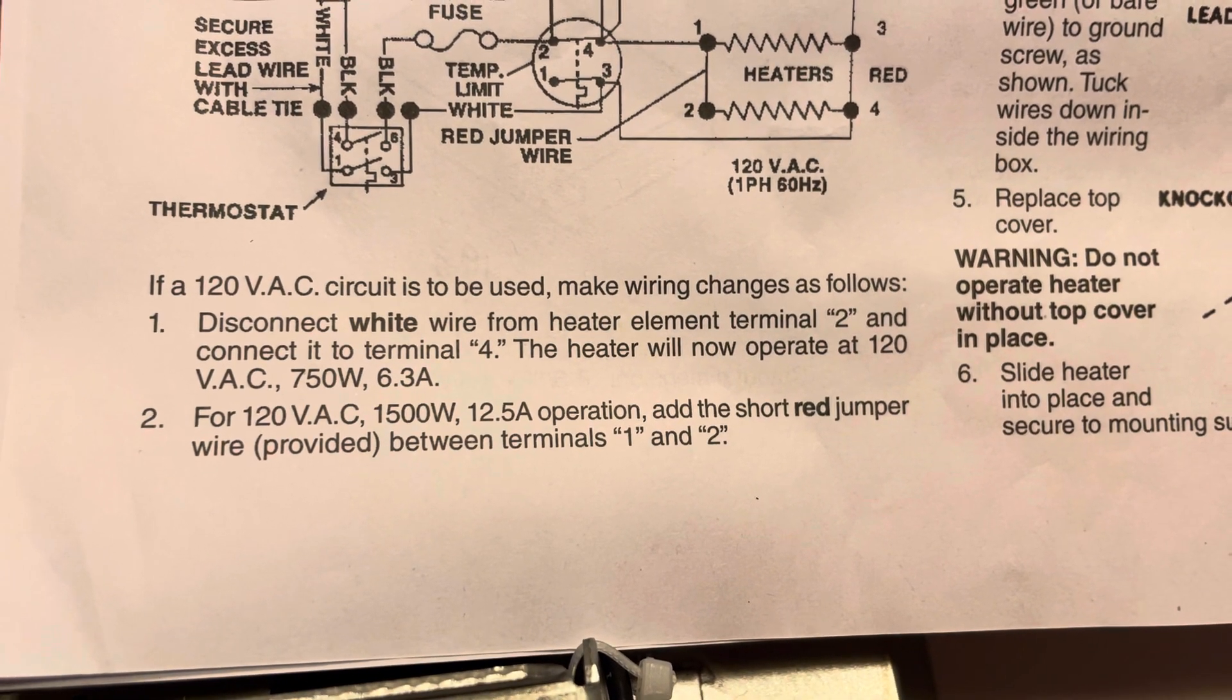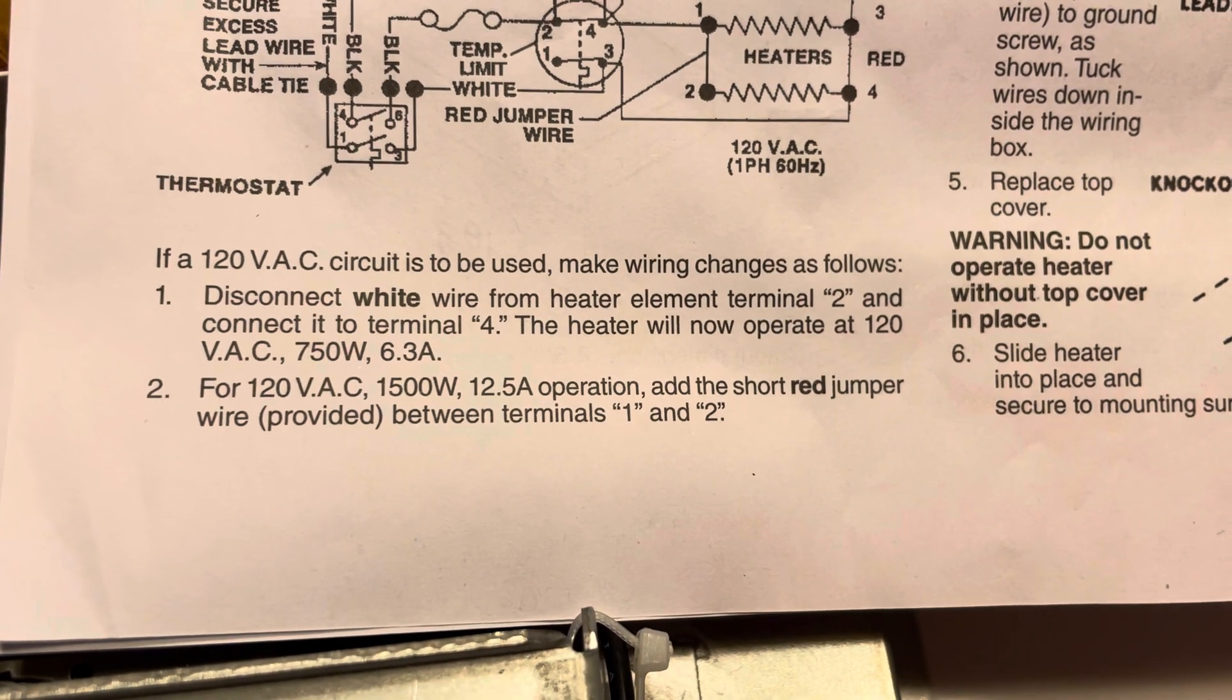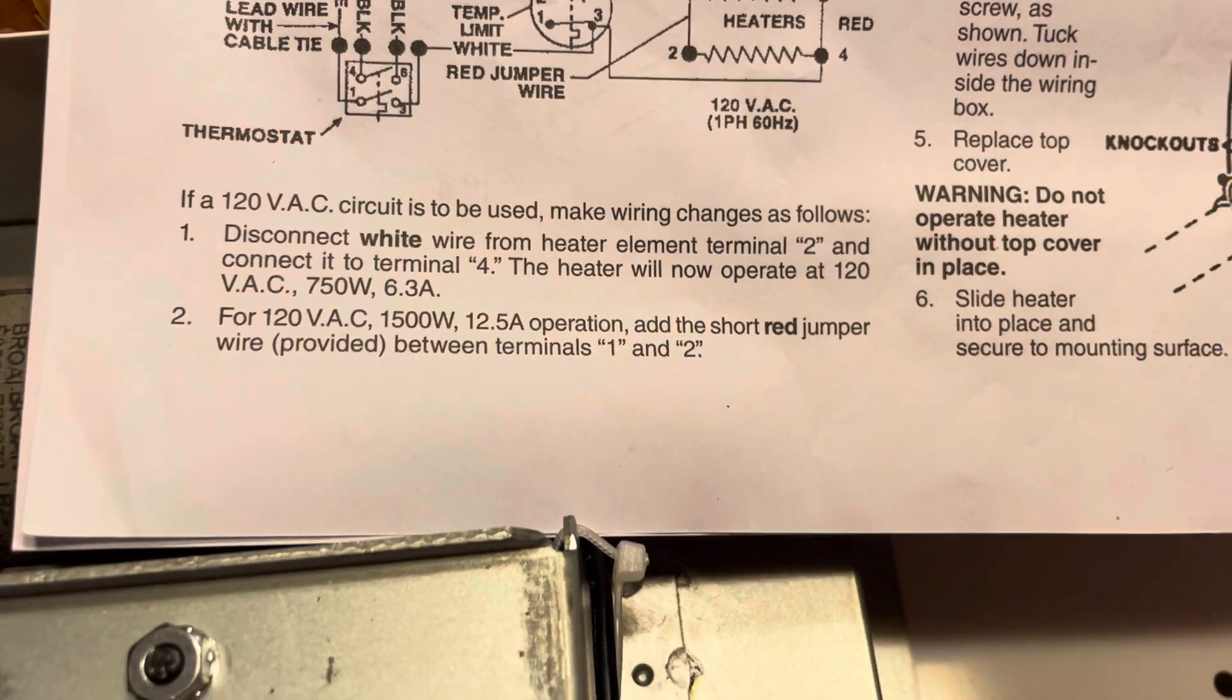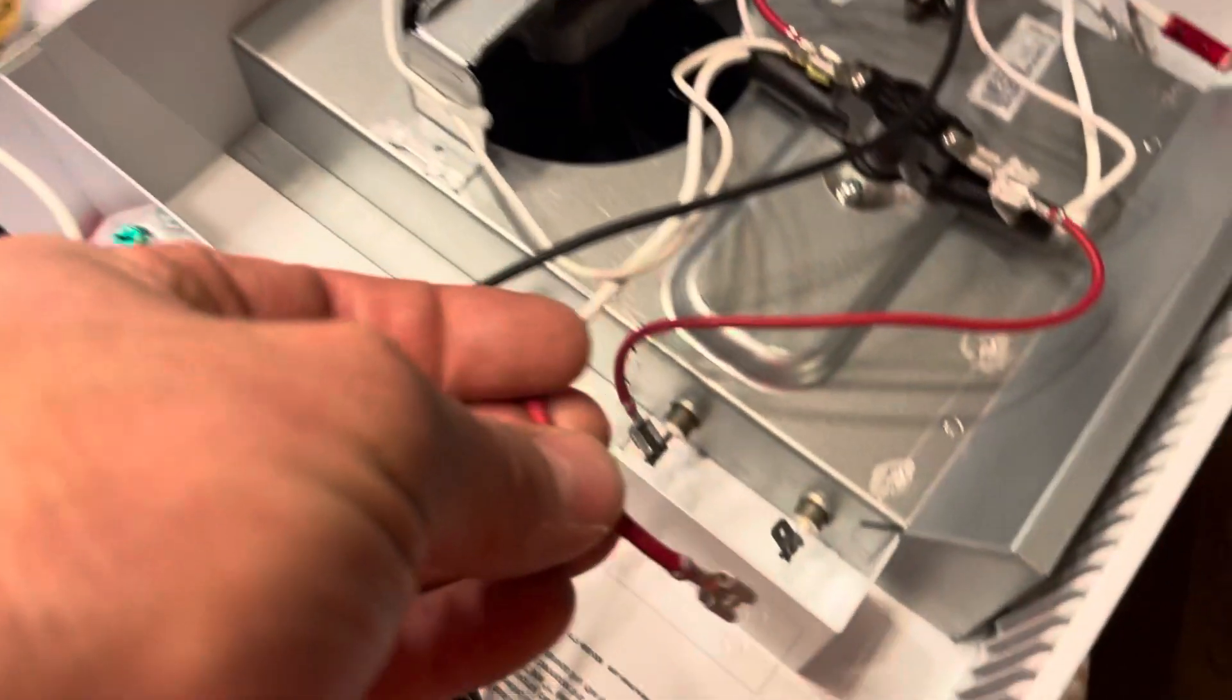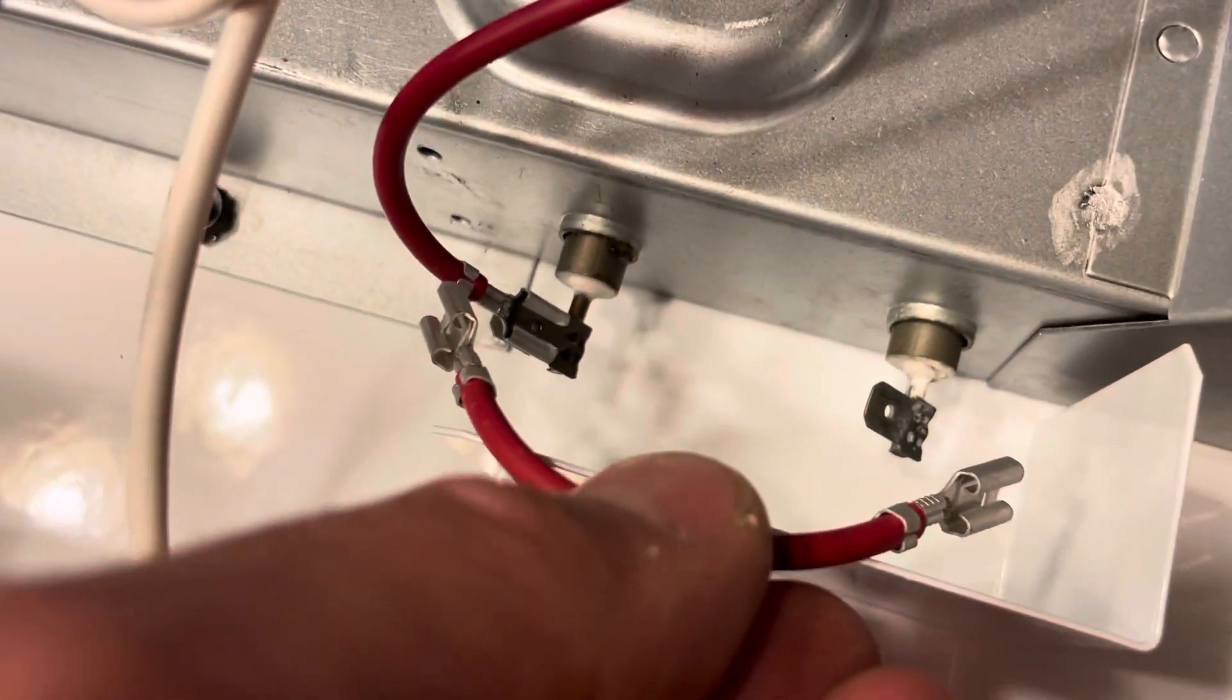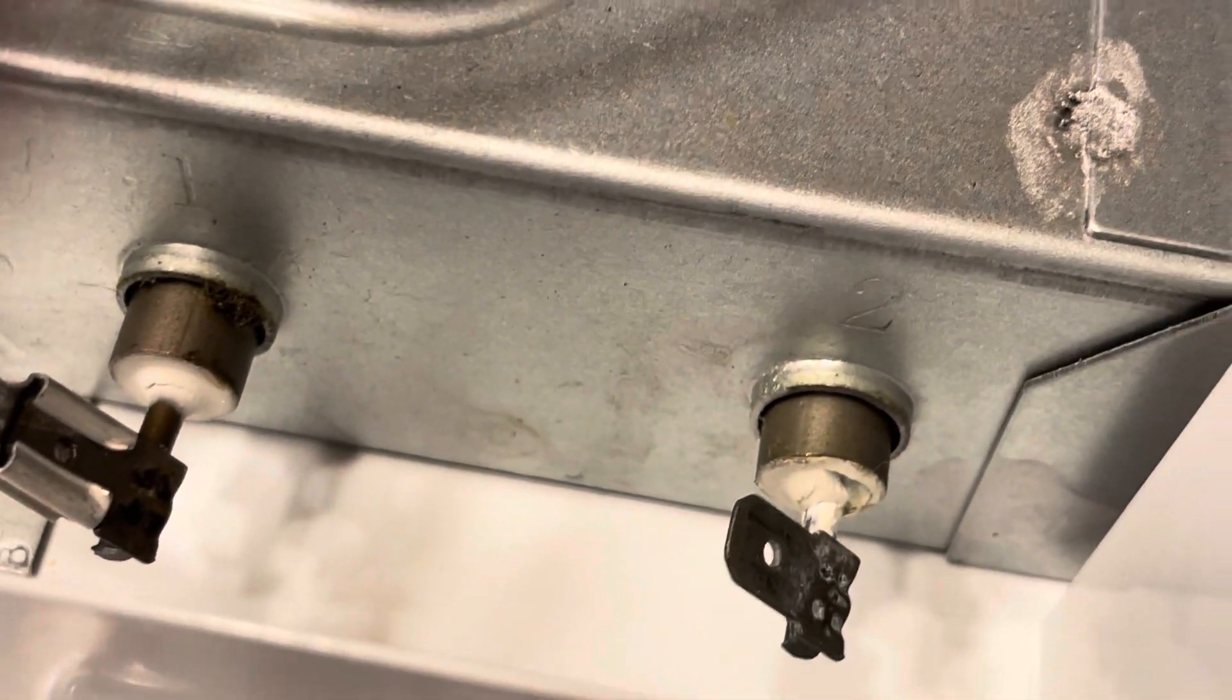That's the condition that we want to use this heater in. However, you can see number two, if you want to go up to 1500 watts, which is 12 and a half amps, you can add the short red jumper wire between terminals one and two. So therefore in the box in the bag they provide you with this disconnected jumper wire.